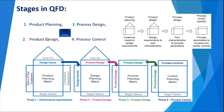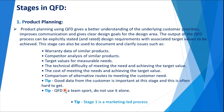There are four stages of QFD: product planning, product design, process design, and process control. In product planning, it is led by the marketing team. They consider various factors such as warranty data, who the competitors are, what the target values are for measurable items, what difficulties they will have, what the cost of meeting the needs is, and achieving the target values.